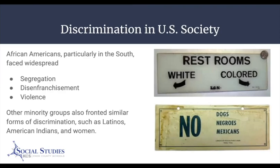Other minority groups faced similar forms of discrimination. As signs on the right show, segregation was directed not just at Black Americans in the South, but also at Mexicans, visible in states like Texas, California, Arizona, and New Mexico. American Indians and women all faced, in many respects, similar issues — they had been denied equal rights in the United States, primarily due to the ascendancy of white men.